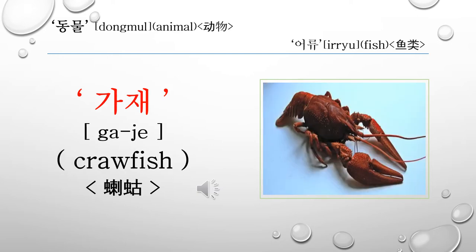This word is 가재. 가재 is called a crawfish in English and it is called 낙구 in Chinese. Let's read it again: 가재.